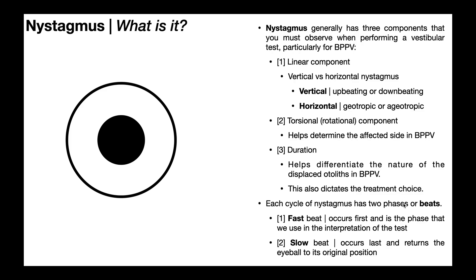Nystagmus also has two phases or beats: a fast beat and a slow beat. The fast beat always occurs first, and this is the phase that we care about — the one we're going to use in the interpretation. After the fast beat, there's a slow beat that returns the eyeball to its original position.